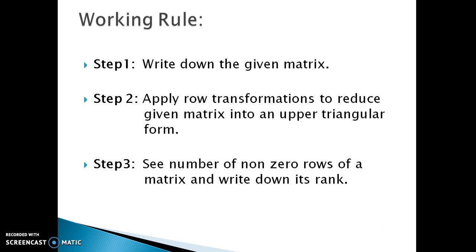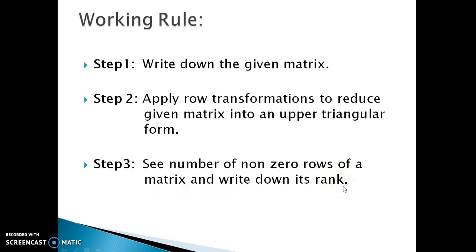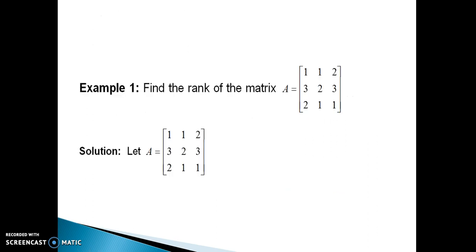Next is the working rule. Step 1: write down the given matrix. Step 2: apply row transformations to reduce the given matrix into an upper triangular form. Step 3: see the number of non-zero rows of the matrix and write down its rank. Without much ado, let us take an example to work out.